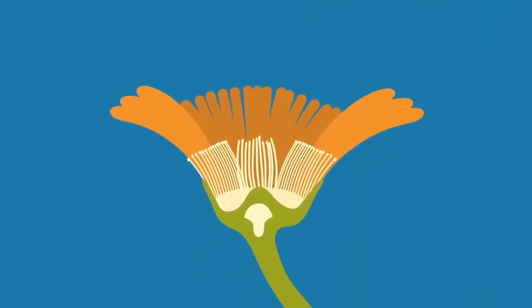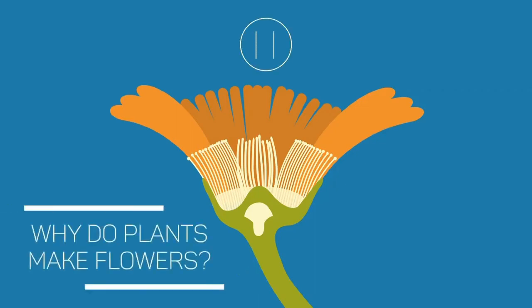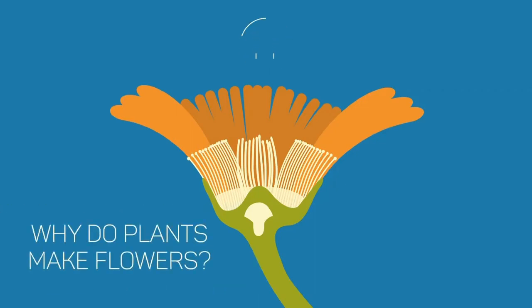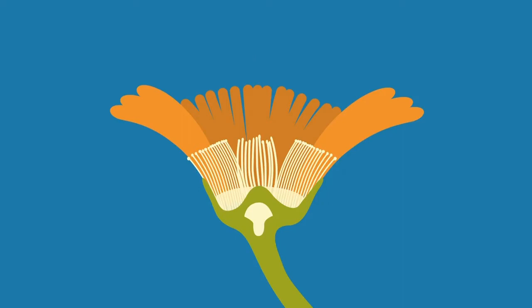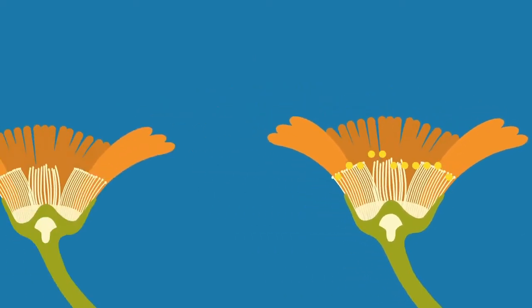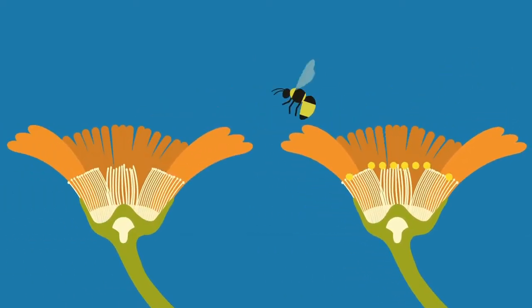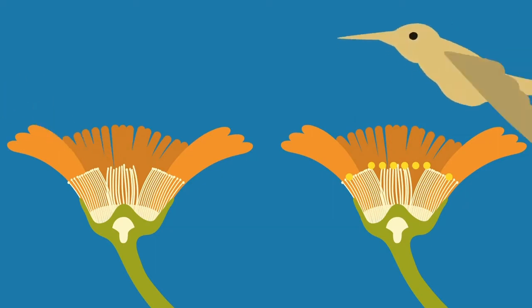The final plant part that we are going to learn about is the flower. Pause the video and try to think why plants make flowers. Not all plants make flowers, but those that do use them for reproduction. Pollen is produced and this fertilizes the ovule. Pollen is transferred from one flower to another by pollinators such as insects, hummingbirds, or the wind.